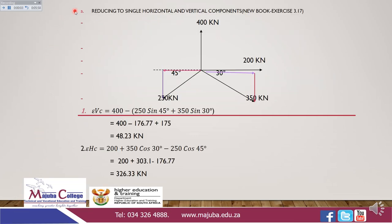Let's take the workout from the new book by R.P. Malby, exercise 3.17. Here we have to resolve the horizontal and vertical components. We are given a 400 kilonewton force towards north, exactly towards north, which means it is our vertical component. And we are given a 200 kilonewton force, which is exactly towards east. These two forces we call independent forces because we will use them as they are: 400 kN as our vertical component, and 200 kN as our horizontal component.